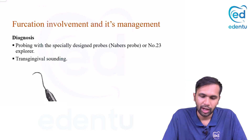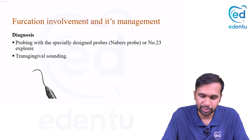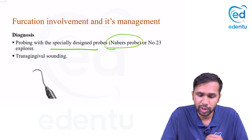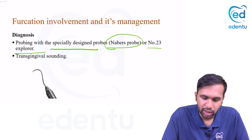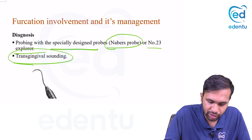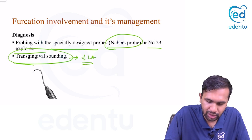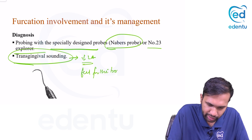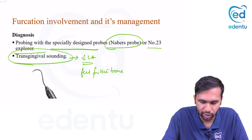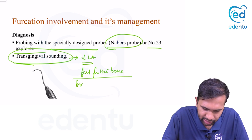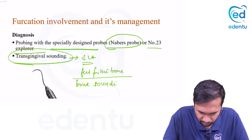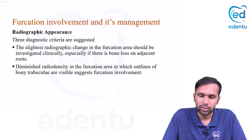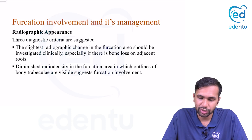Furcation involvement is diagnosed using specially designed probes — the Nabers probe. If a Nabers probe is unavailable, a number 23 explorer can be used. You can also perform transgingival sounding under local anesthesia, inserting the probe to the bone surface and feeling the bone morphology — also referred to as bone sounding.